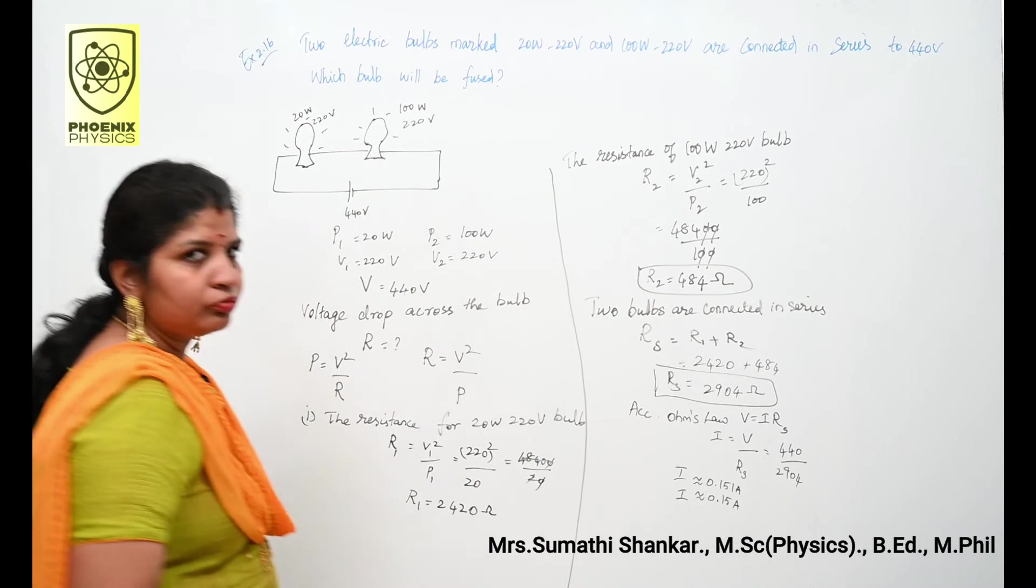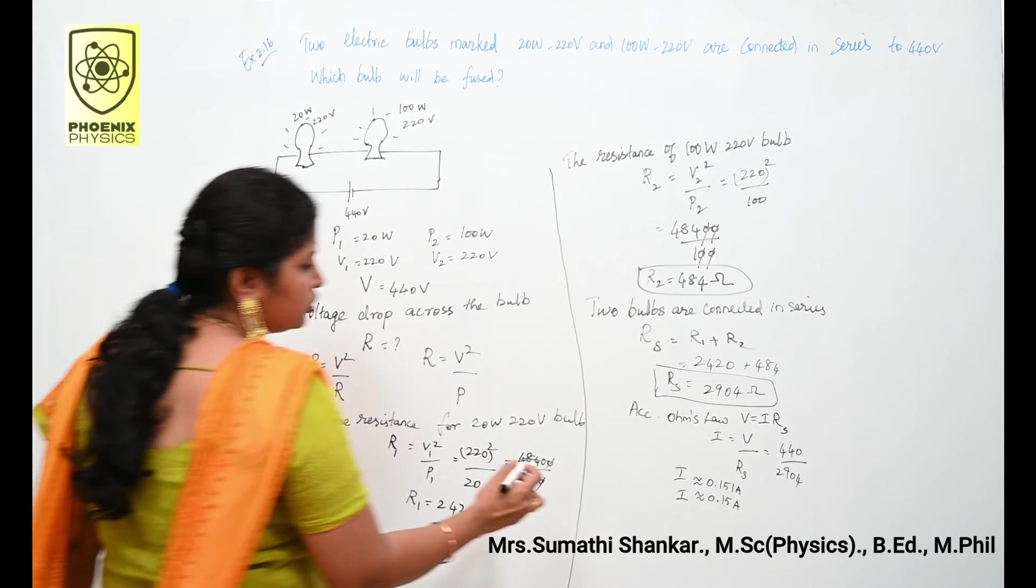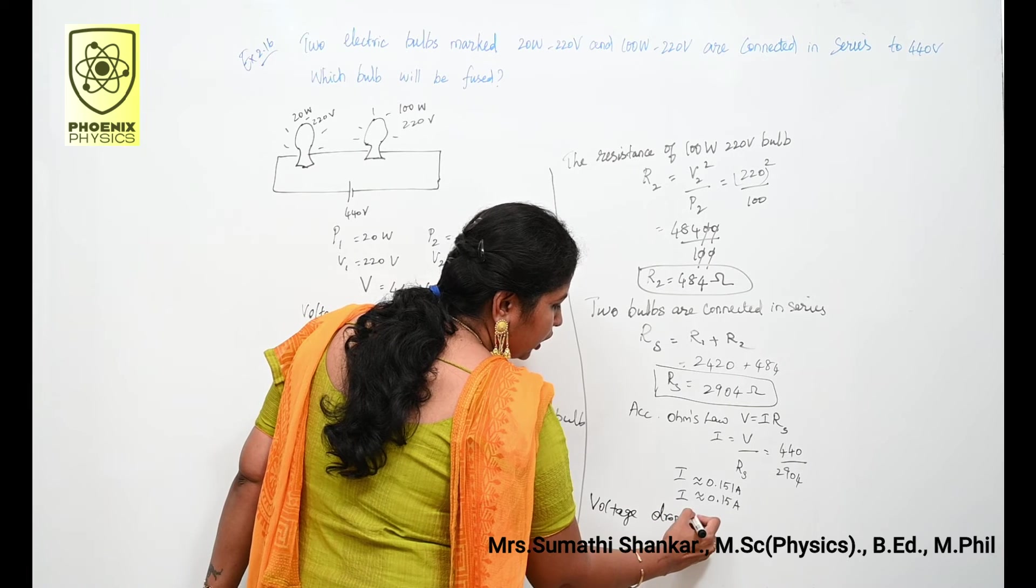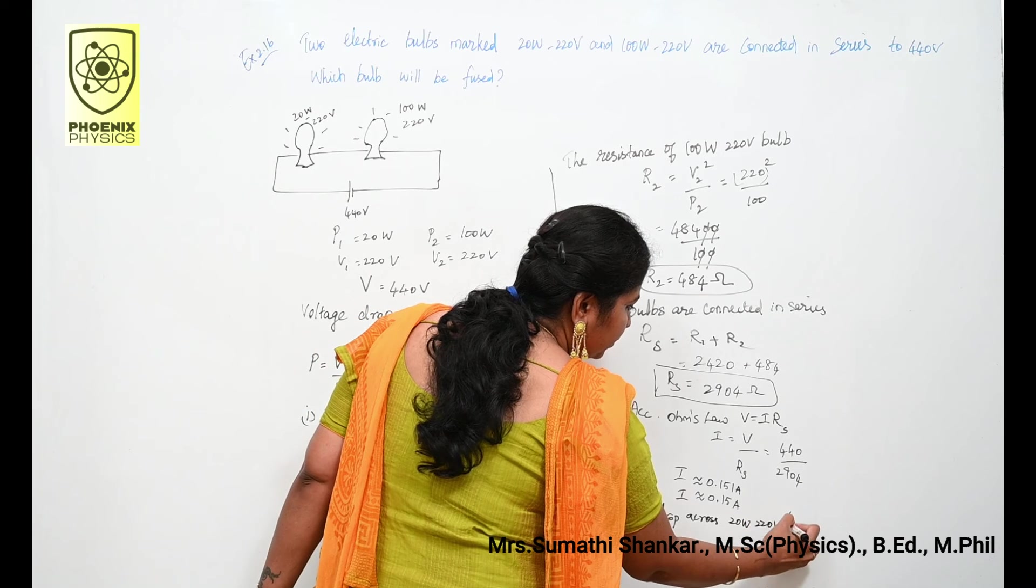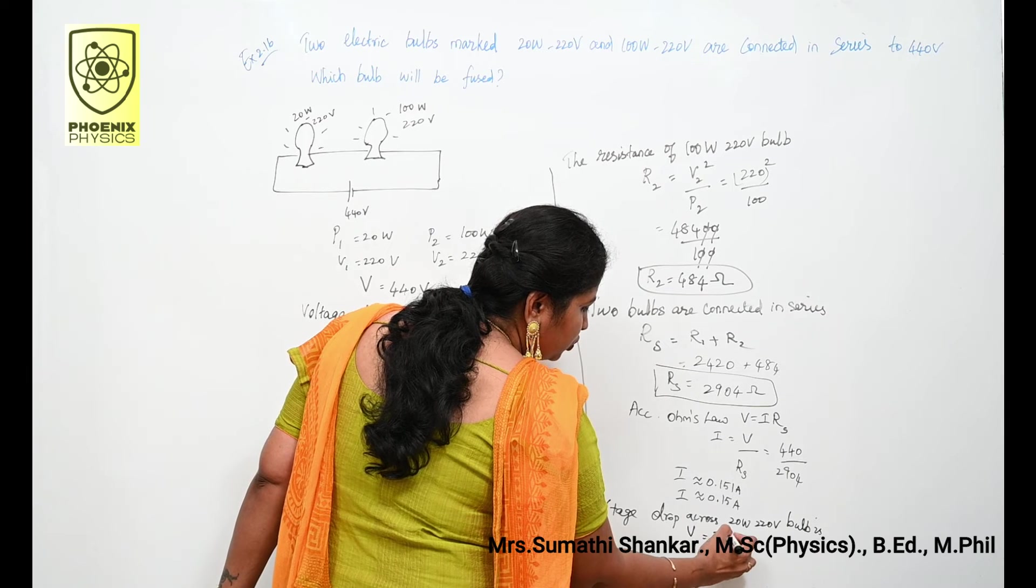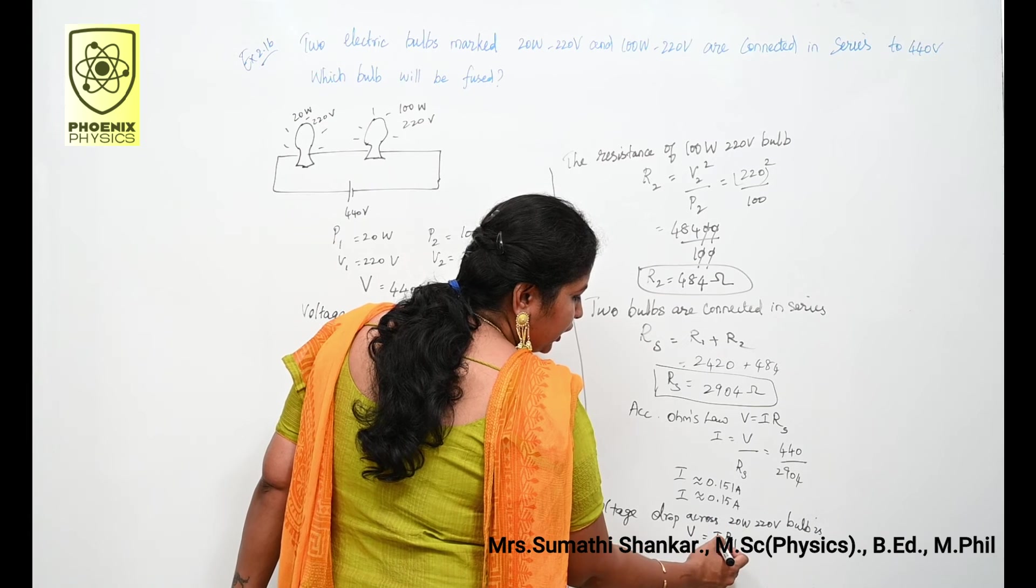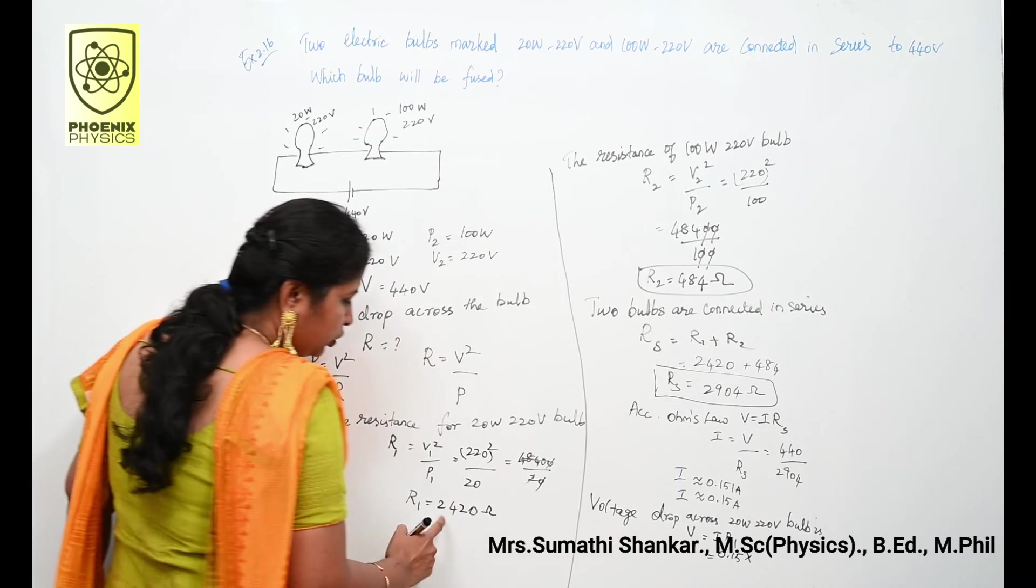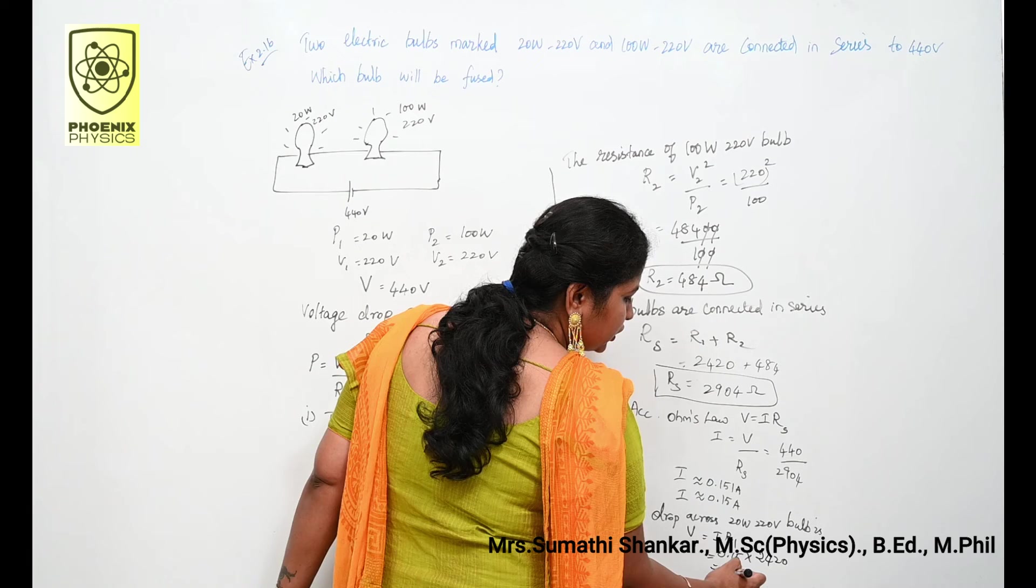Our aim is to find out voltage drop across the bulb. Voltage drop across 20 watt 220 volt bulb is V1. V1 that is I into R1. I is 0.15 into R1 is 2420. Your answer is 363 volt.